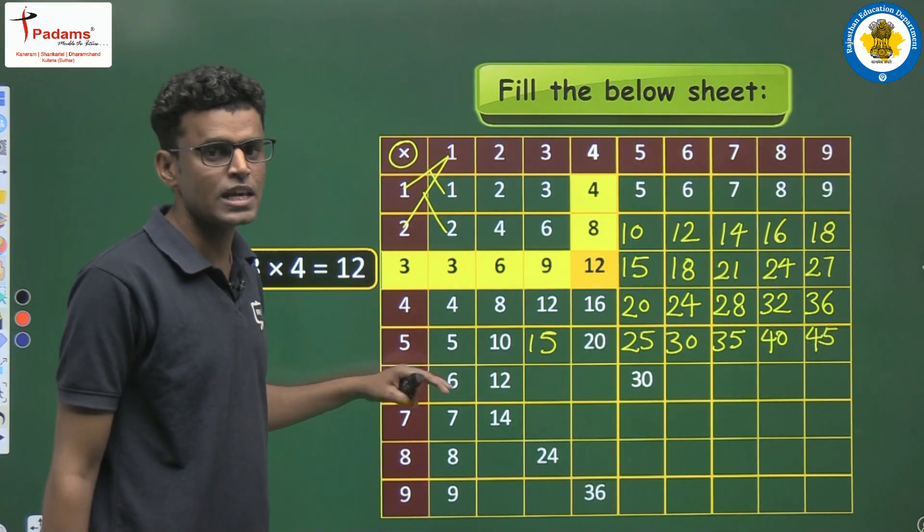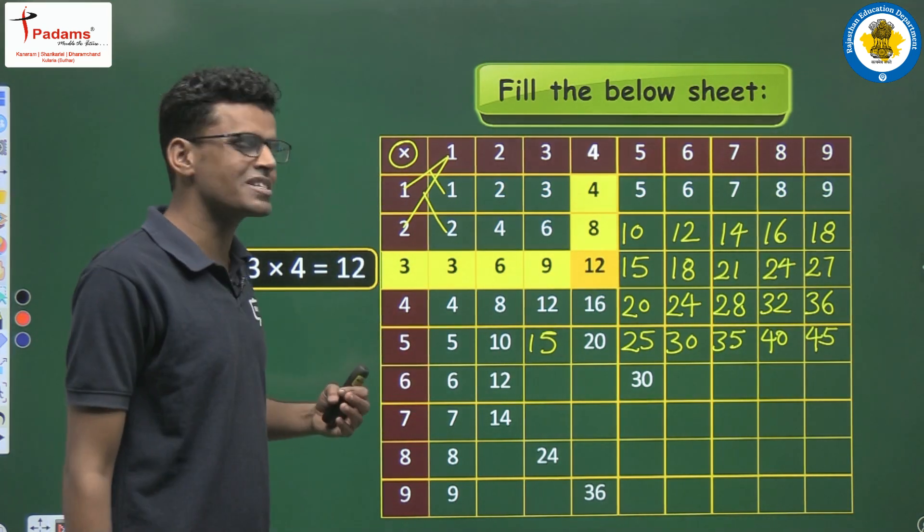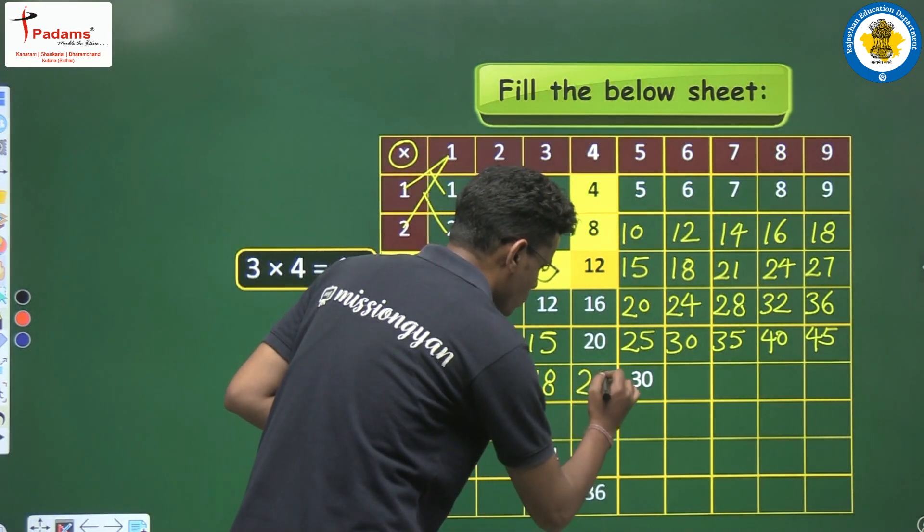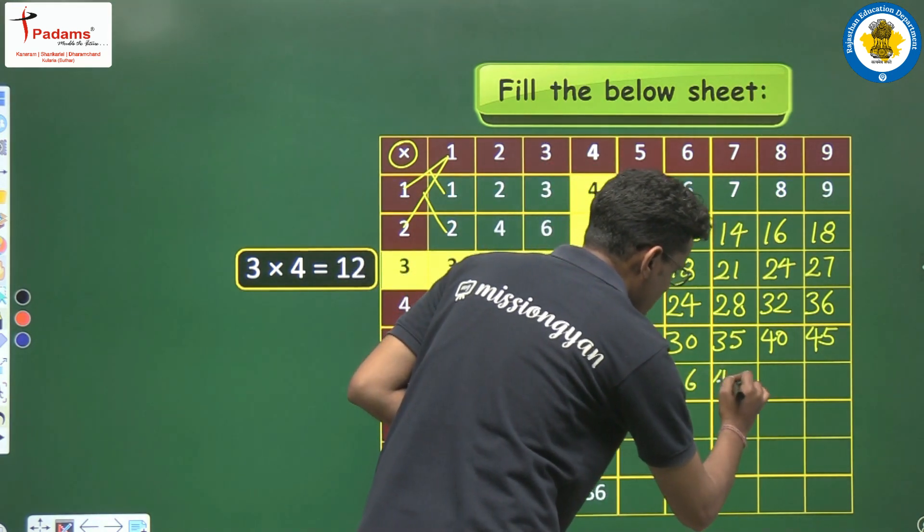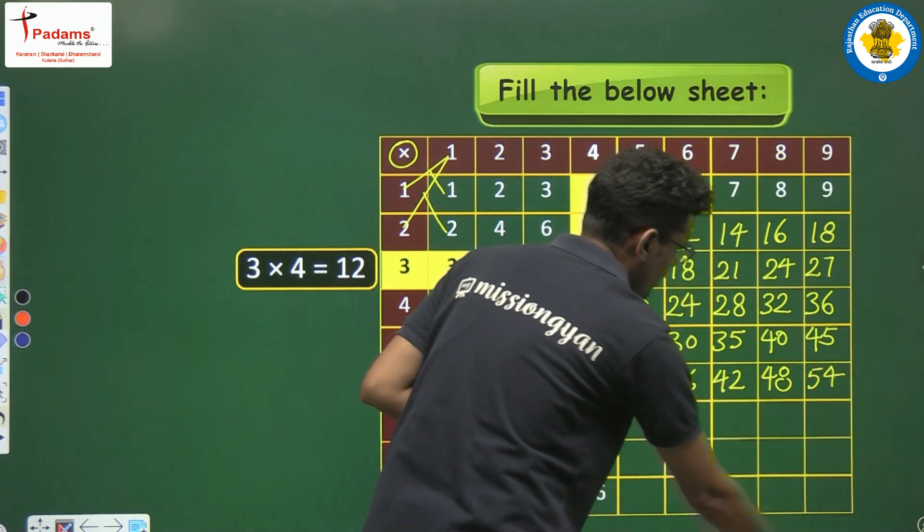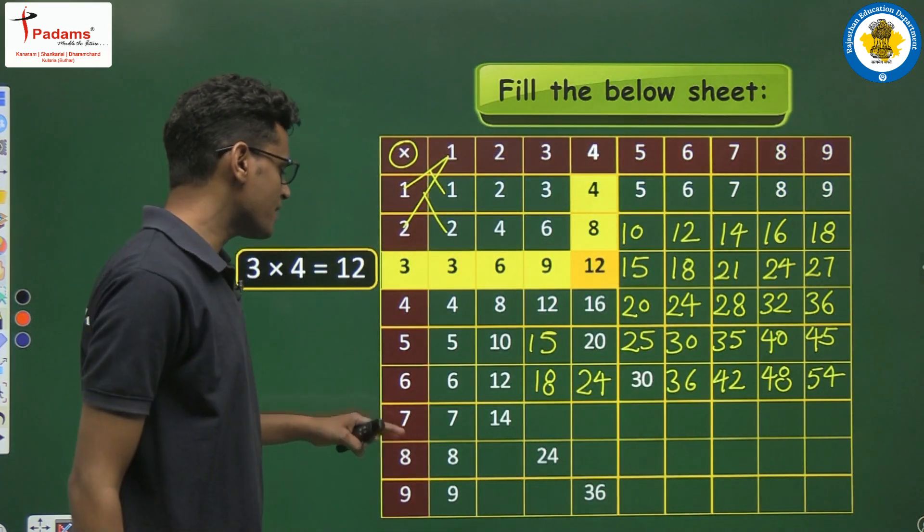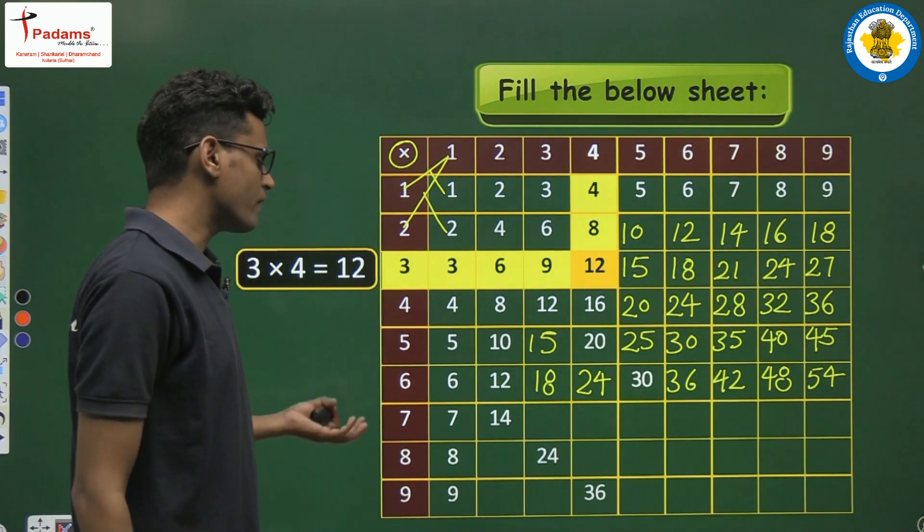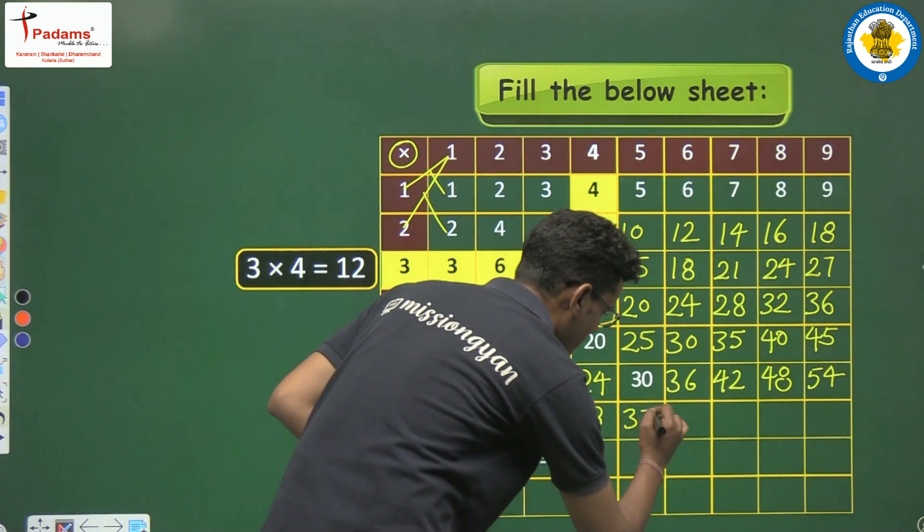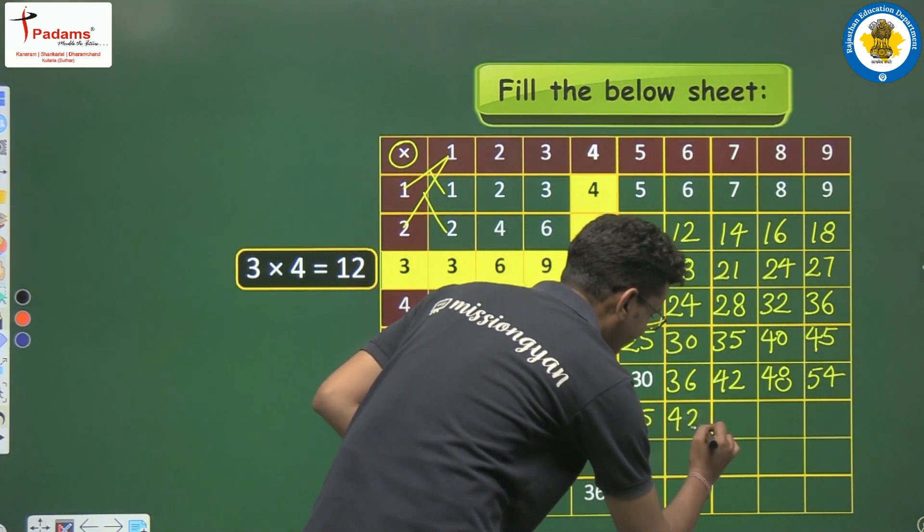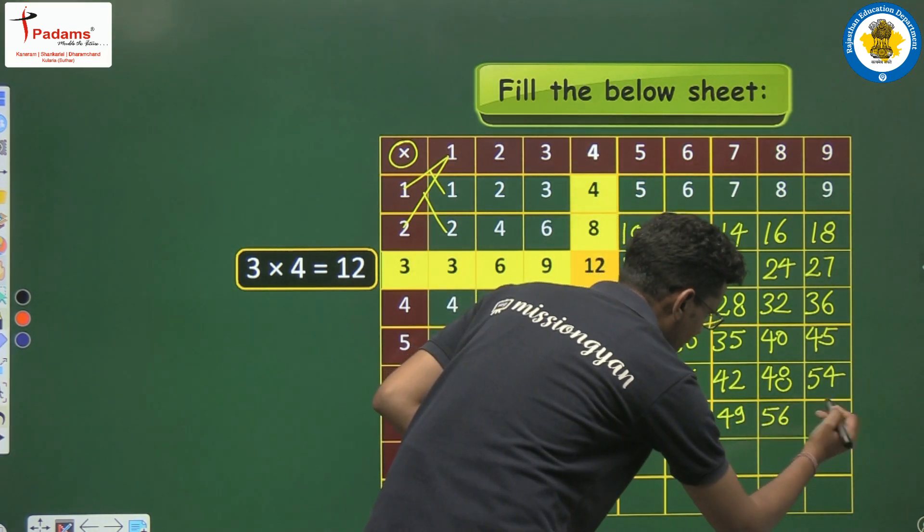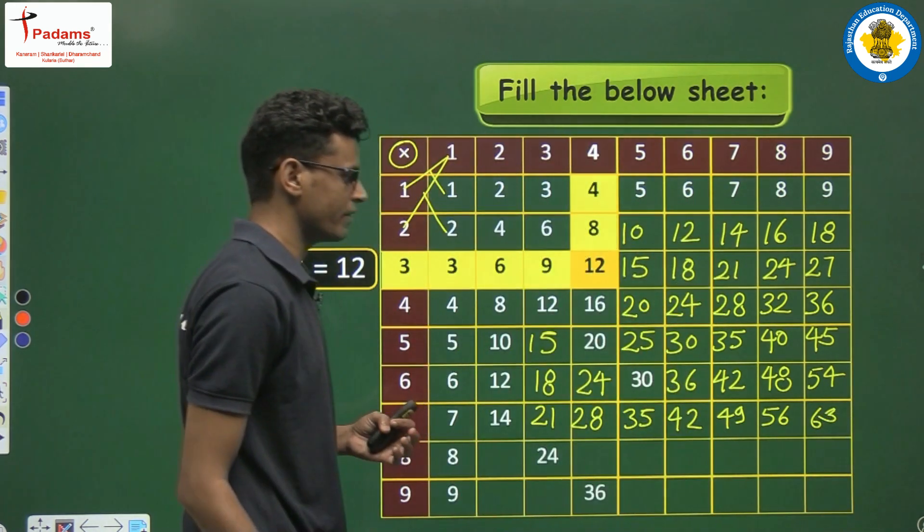If we talk about the table of 6, then easily we can say 6 ones are 6, 6 twos are 12, 6 threes are 18, 6 fours are 24, 6 fives are 30, then 36, another will be 42, then 48 and 9 times we have 54, okay? So another table is our 7's table. In the 7 table we have 7, 14, 21, 28, then we have 35,